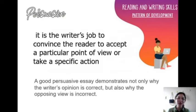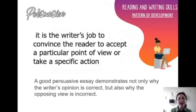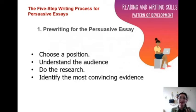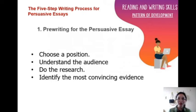A persuasive essay is about trying to convince readers to believe in your position, and you also want them to take an action. It is very important that you show both sides of the issue. What are the five steps in the writing process for persuasive essays? Let us review: we have pre-writing, drafting, revising, editing, and publishing. These are helpful tips — not applicable to all, since some writers have their own way — but these are general tips when writing a persuasive essay.